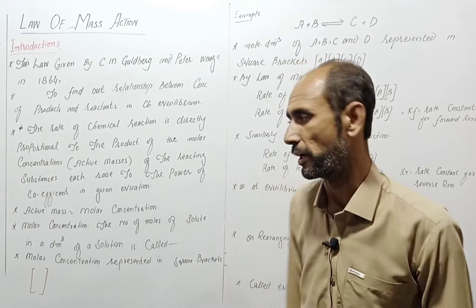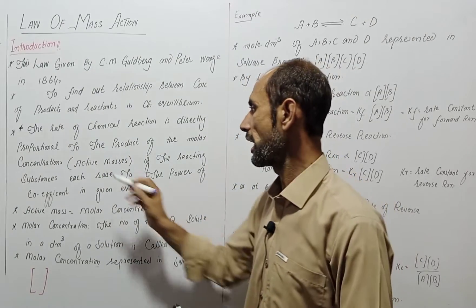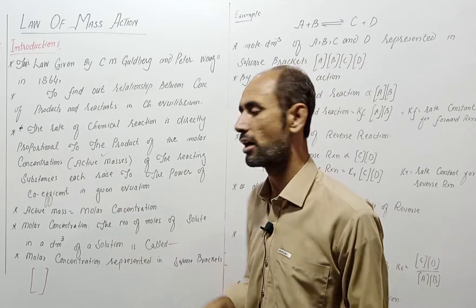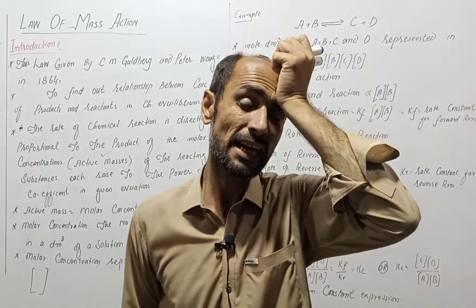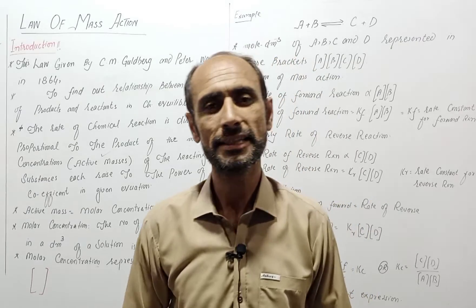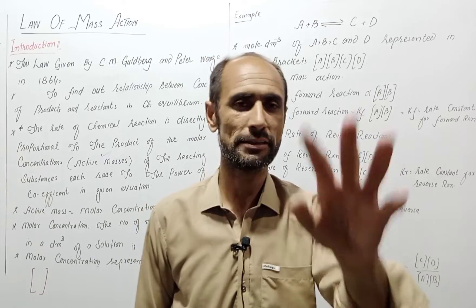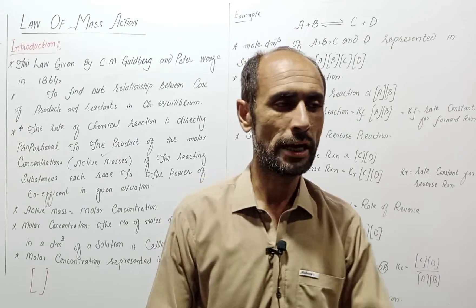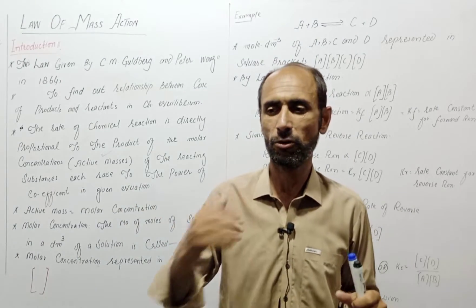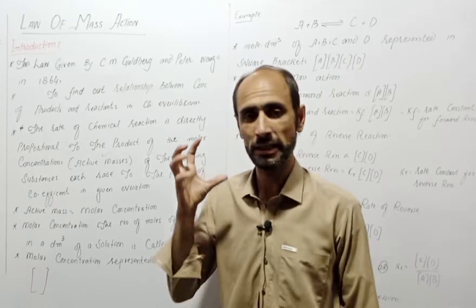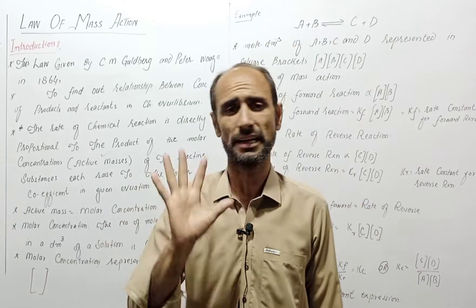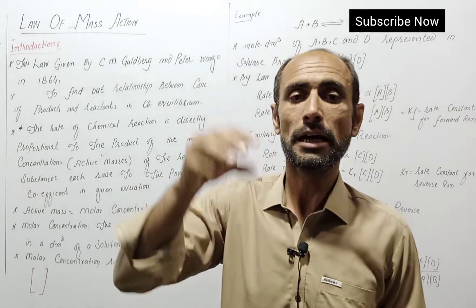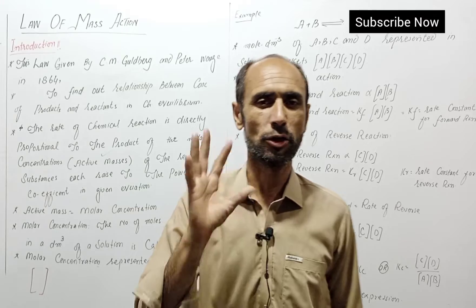The rate is directly proportional to the reactant concentration — if the reactant concentration increases, the reaction rate increases. Now let's study the term 'active mass.' What is active mass? This may appear in a paper as: 'What is active mass?' or 'What is molar mass?' Molar mass is also called active mass.